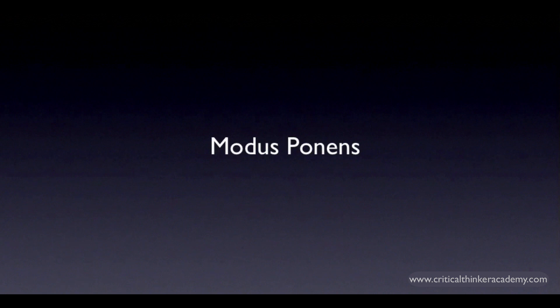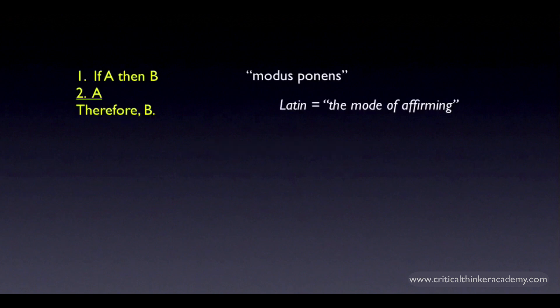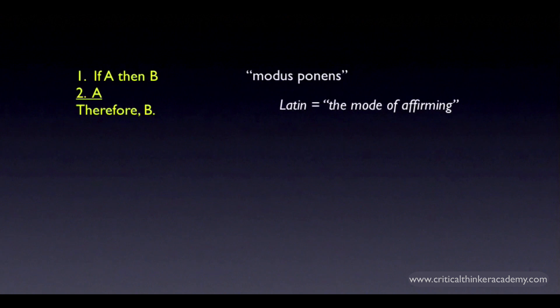We'll start with the most basic valid form known as modus ponens. The term modus ponens is a holdover from the days when logic was taught in universities during the Middle Ages, and the language of instruction was Latin. So we have all these Latin names for argument forms and fallacies that people still use. The full Latin name is modus ponendo ponens, which means something like 'the mode of affirming by affirming.' It refers to the fact that with this conditional form, we're affirming the consequent by affirming the antecedent. But everyone today just calls it modus ponens.